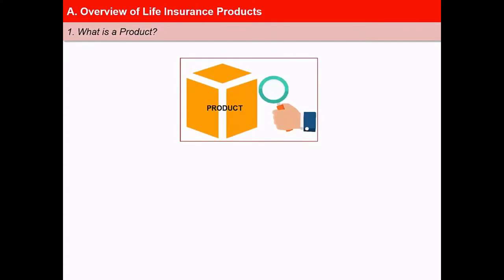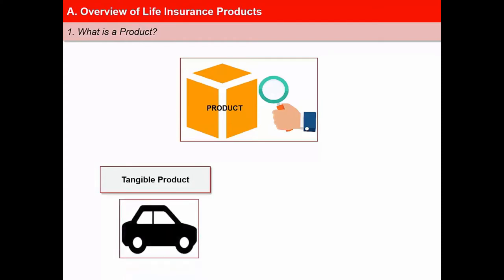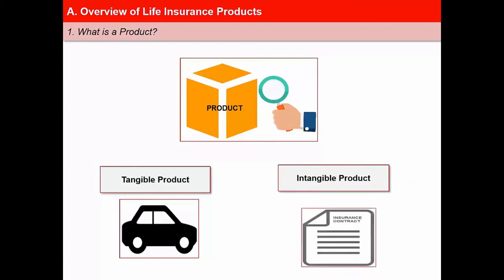Let us begin by understanding what a product is. A product is nothing but the output or result of certain labor or efforts. Products can be of two types: tangible products, which refers to physical objects that can be directly perceived by touch, for example a car or a television set; and intangible products, which refers to products that can only be perceived indirectly, for example life insurance.